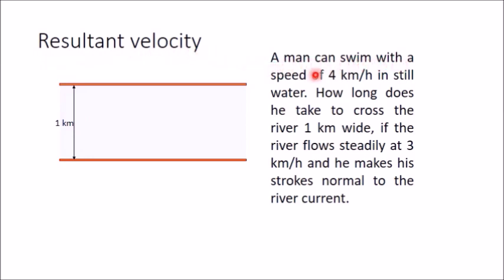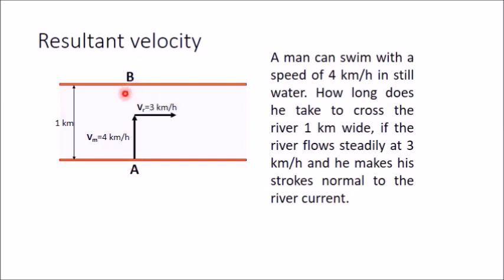Here is an example where resultant velocity needs to be calculated. A man can swim with a speed of 4 km per hour in still water. He tries to cross a river 1 km wide where the river flows at 3 km per hour, making his strokes normal to the river current. He starts from A trying to reach B, but because of the river's velocity he will reach some other point C.